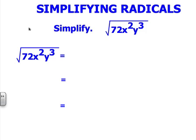We have the square root of 72x²y³. I'm going to think of what factors multiply together that give me each of these variable terms and numerical terms.